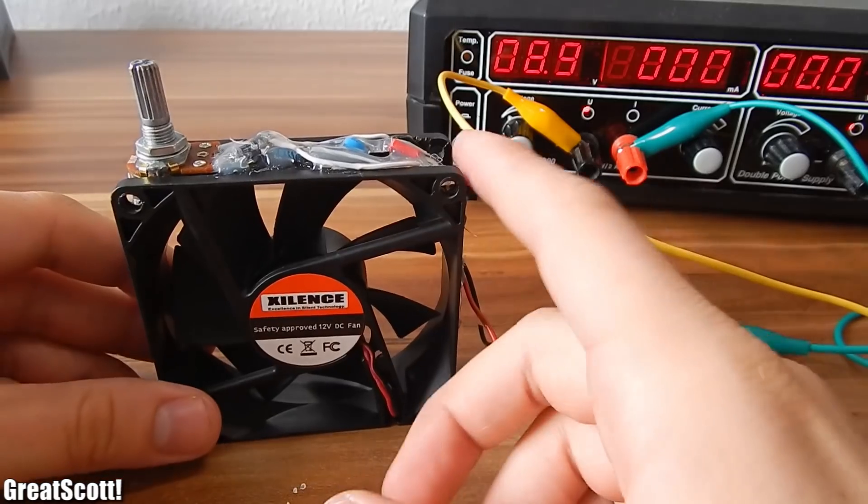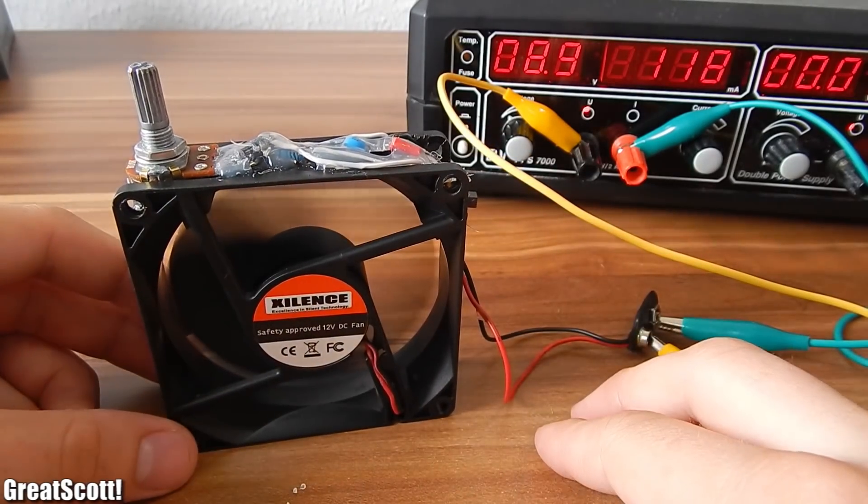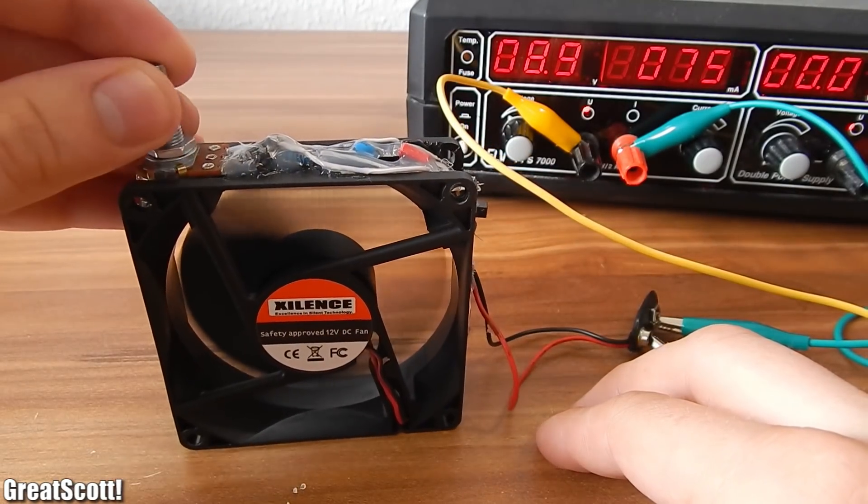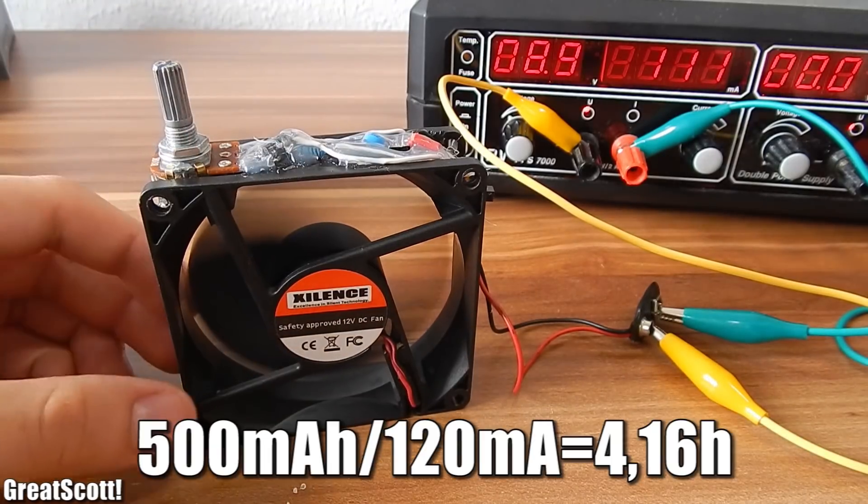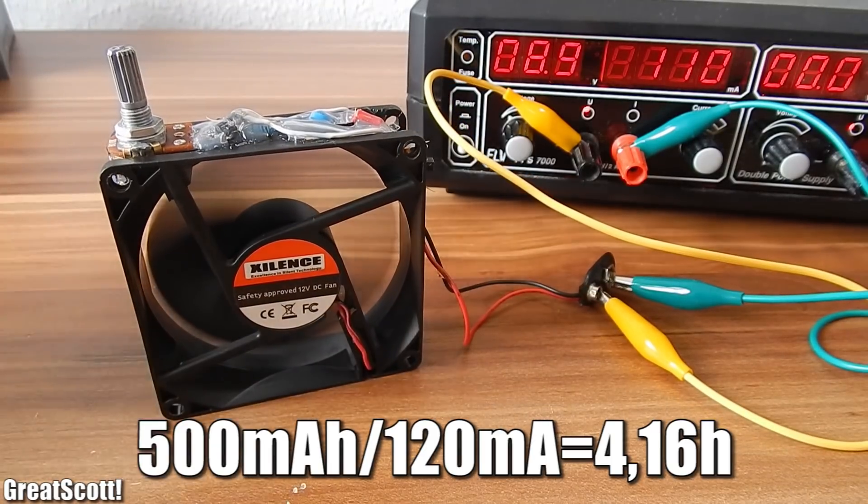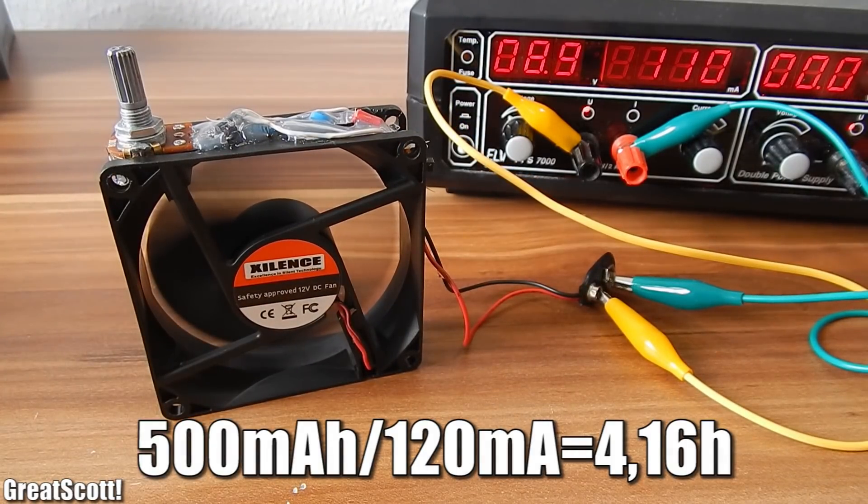And there we go. We draw around 120 milliamps, and a 9 volt battery like this has a capacity of around 500 to 600 milliamp hours, so we can power our fan for four hours in the worst case.